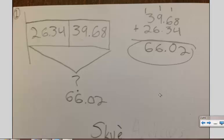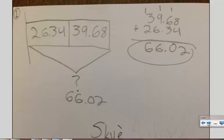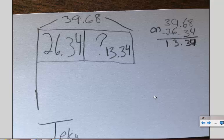In an addition tape diagram like this student drew, the two parts add together to make the whole. Now it doesn't do the math for you, but it helps you model the math. One criticism I have of this tape diagram is this 39 box should really be bigger than this 26 box. We want it to be proportional because 39 is a bigger number than 26.